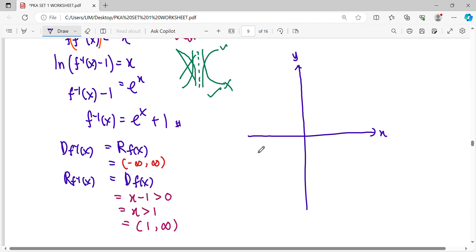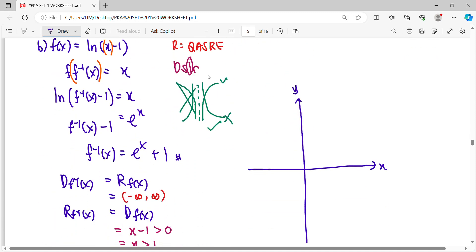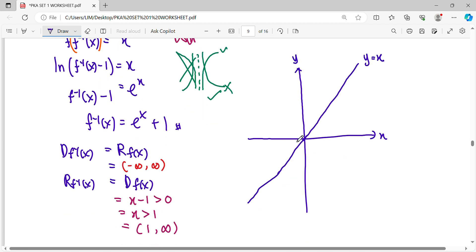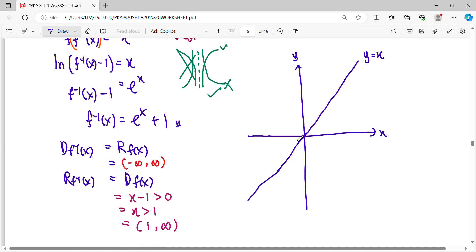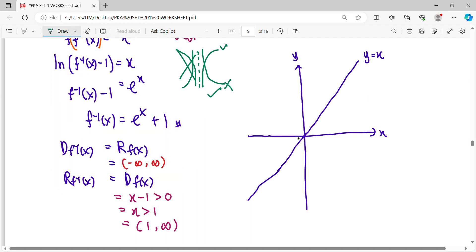And because we want to draw the inverse function together in the same axis, this means we need our reflection axis. Our reflection axis will be y equals to x. So this is the straight line. And we're starting drawing the log. So log, where's the asymptote for?